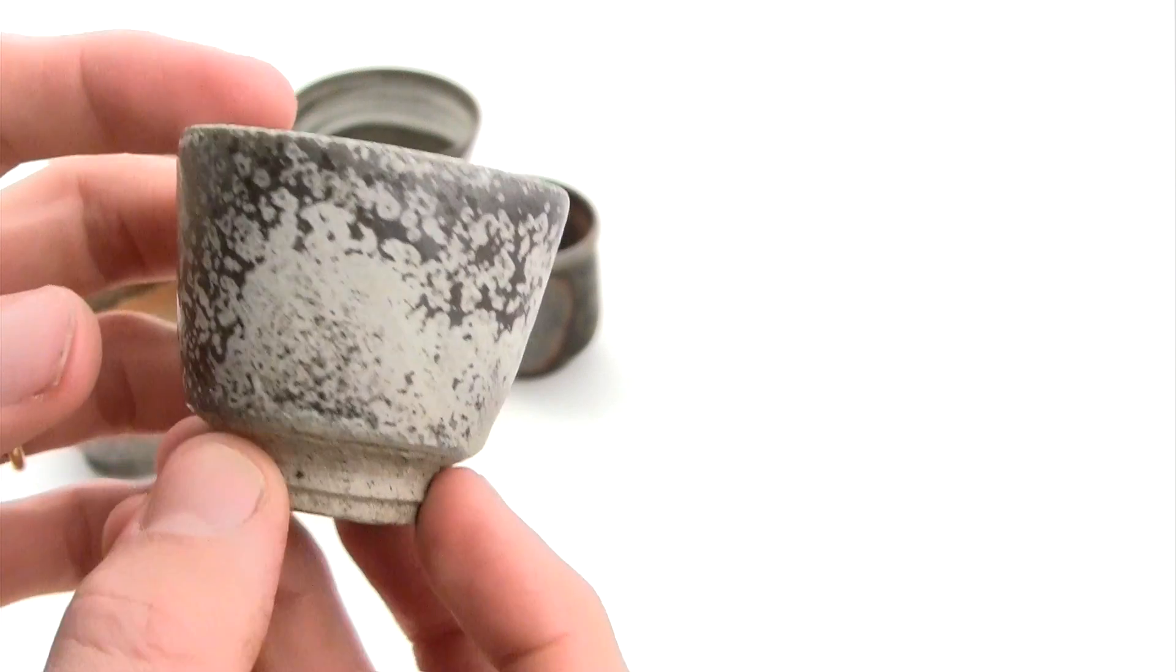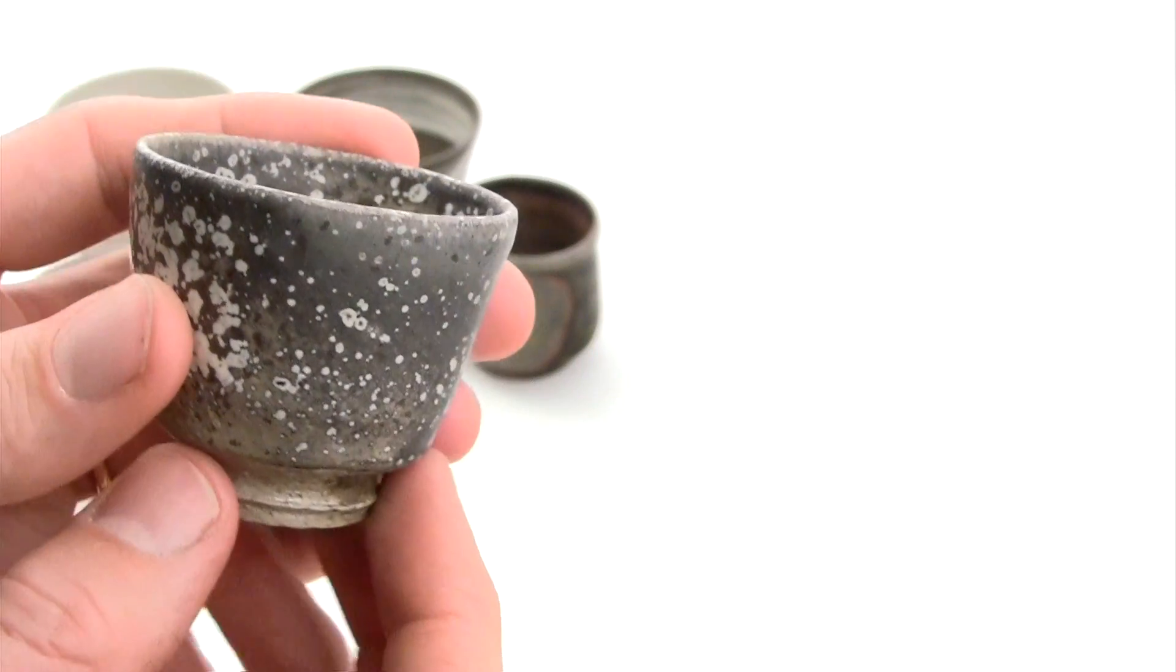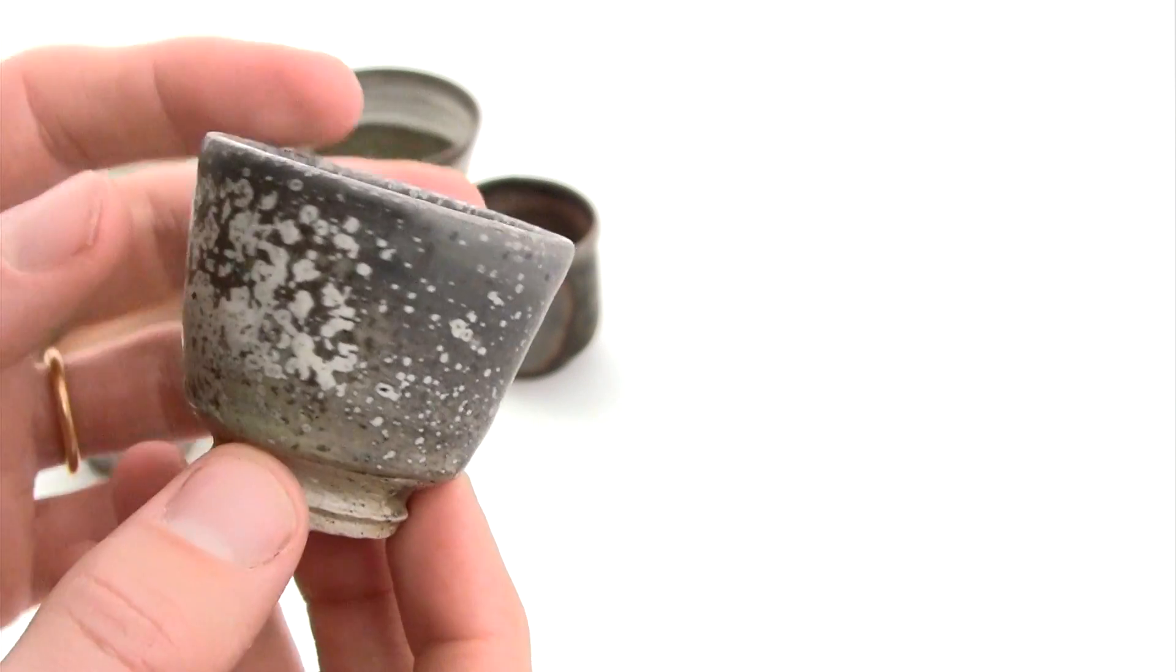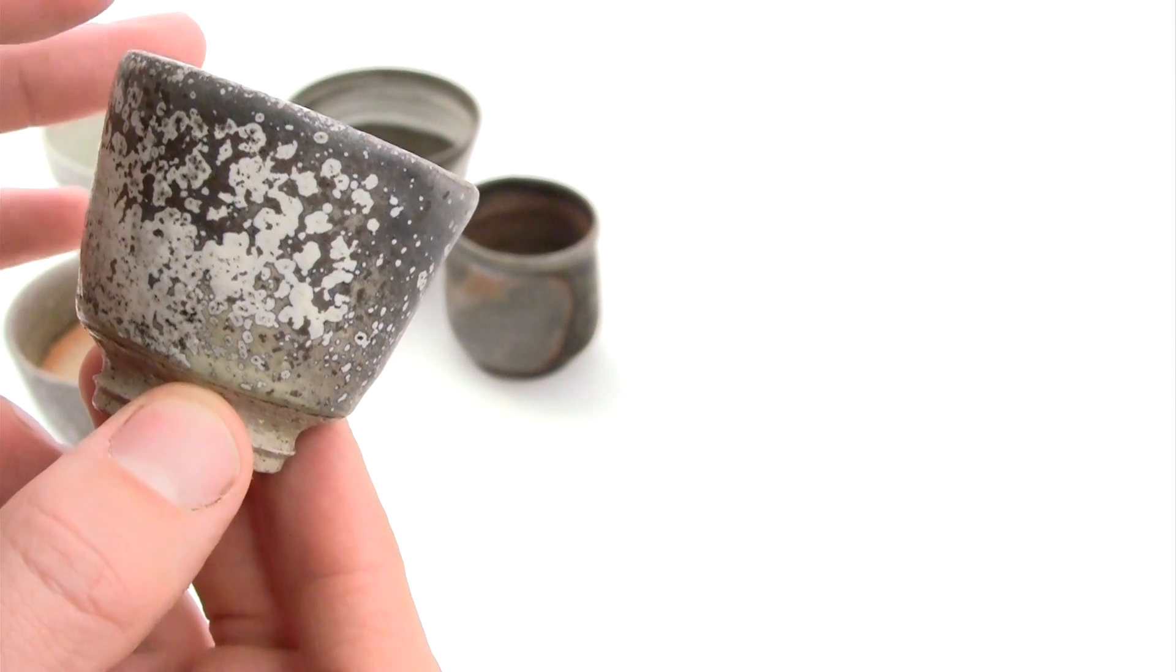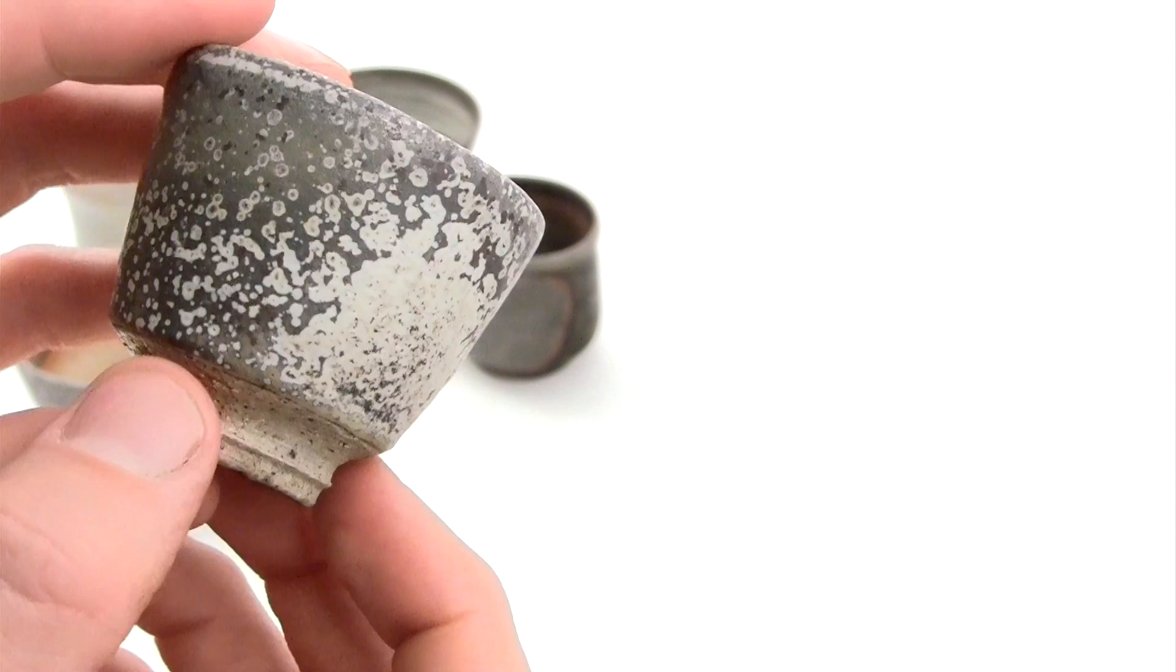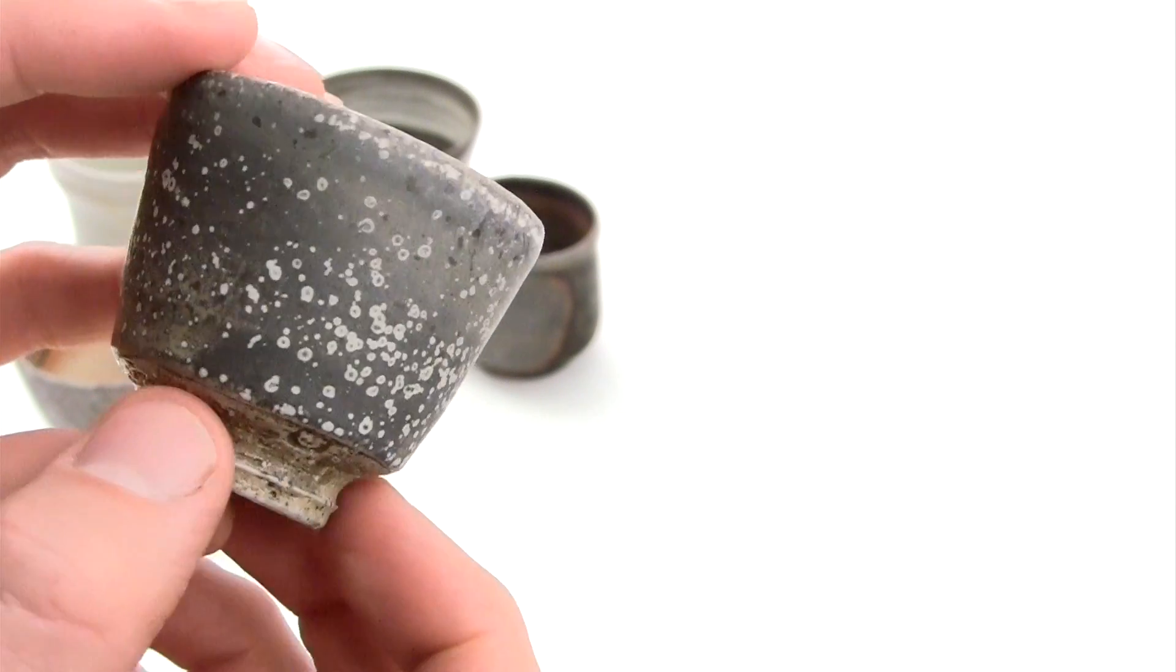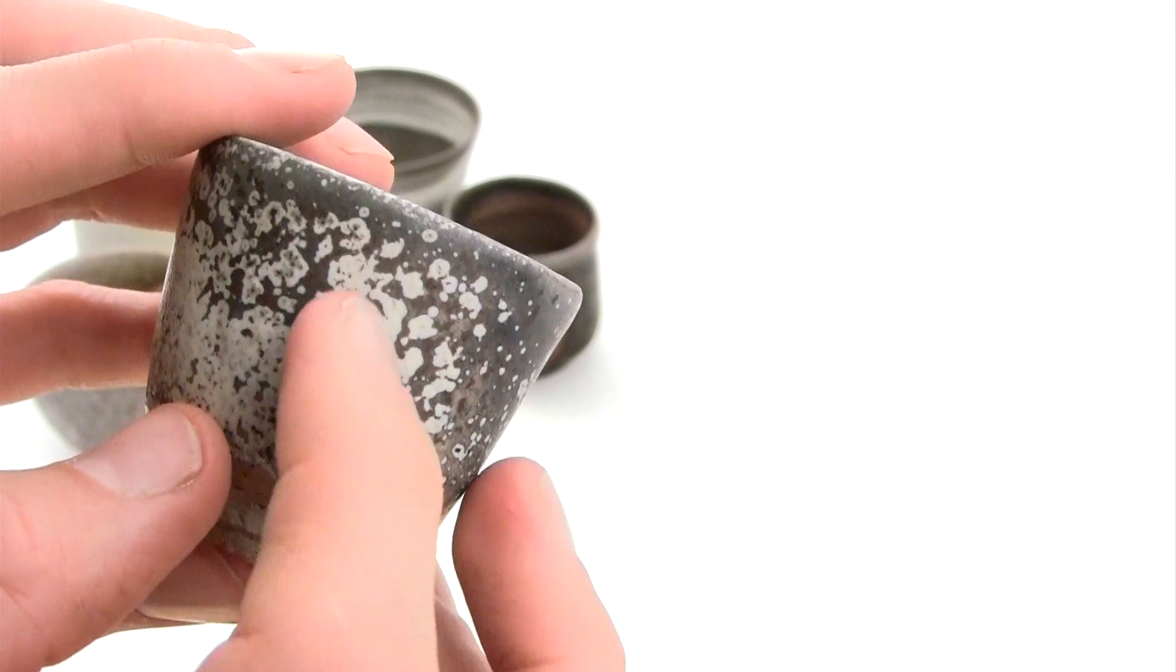This pot tells a very special story from the kiln. During the firing, the entire pot was grey. But during the cooling, in a special part of the kiln, in a special environment, it's almost impossible to create once again. These crystals creating during cooling became white.